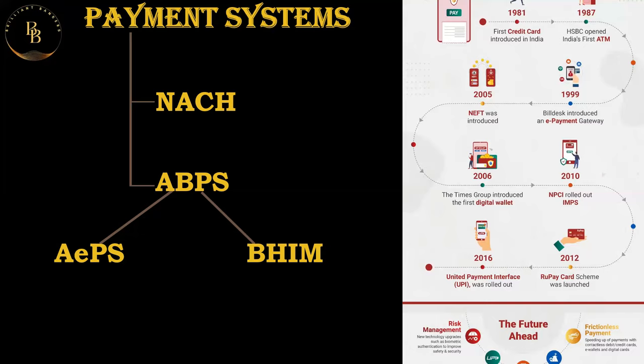BHIM Aadhaar Pay is a mobile app-based payment system linked to Aadhaar. It enables person-to-person money transfers using a VPA address linked to Aadhaar. Merchants can also accept payments using BHIM QR codes. It facilitates digital payments without debit cards or reliance on internet banking and promotes cashless transactions.